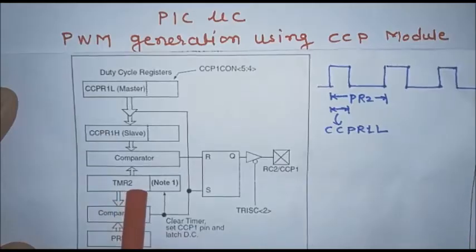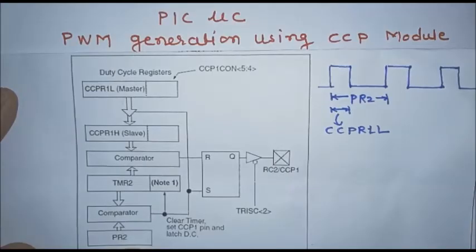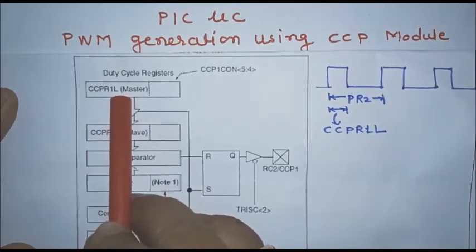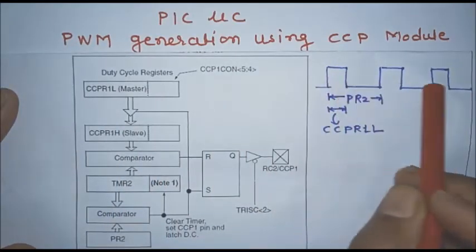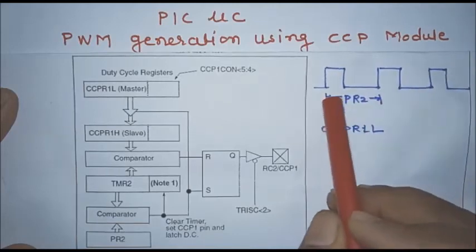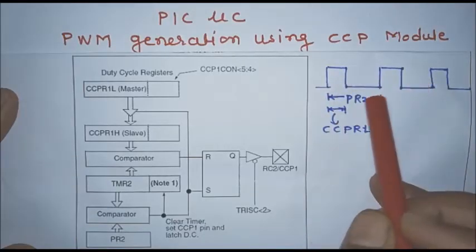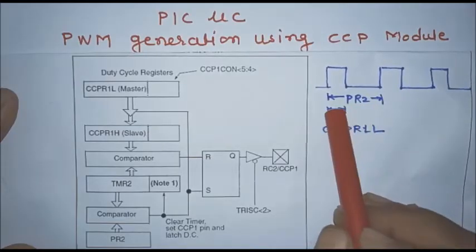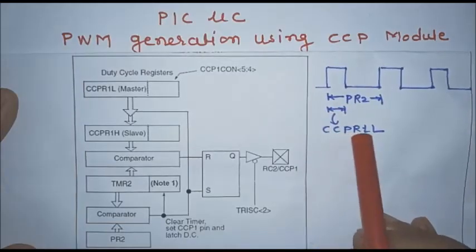TMR2 is the Timer 2 register, PR2 is the period register, and CCPR1L register is used in this PWM module to store the count related to duty cycle. For example, the count related to frequency or time period T of the PWM signal should be stored in PR2, and the count related to T-on, related to duty cycle, should be stored in CCPR1L.